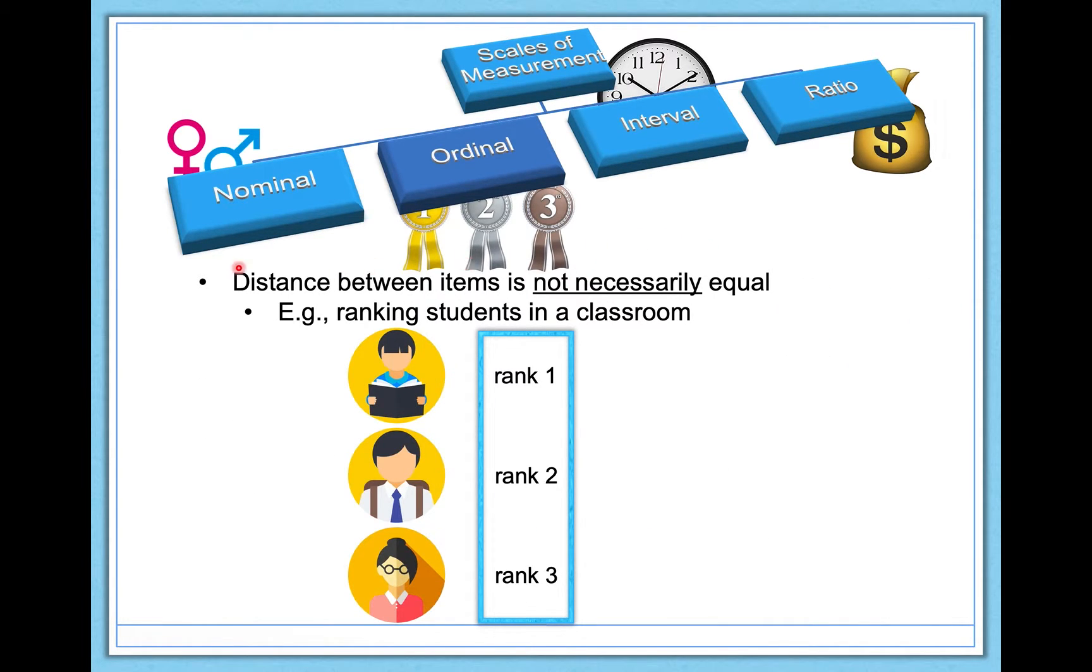I want to take a second to highlight this key point: the distance between items is not necessarily equal. Let's say I'm a professor and I wanted to rank my students in my class so that I can give some public praise to the top three performers. I of course wouldn't really do this, but I very well could. So here's my top performer, my second best student, and my third best student.